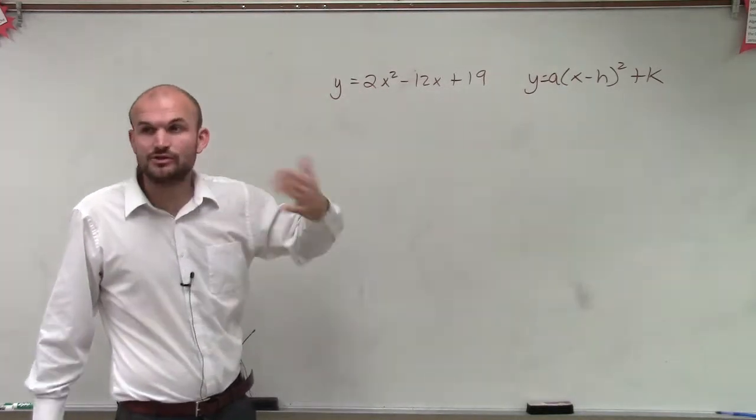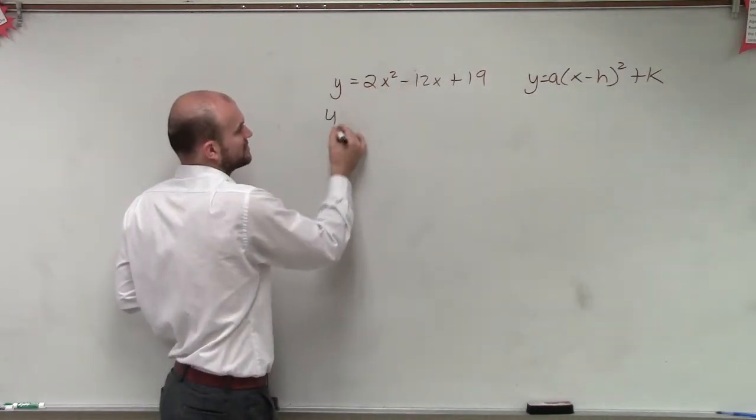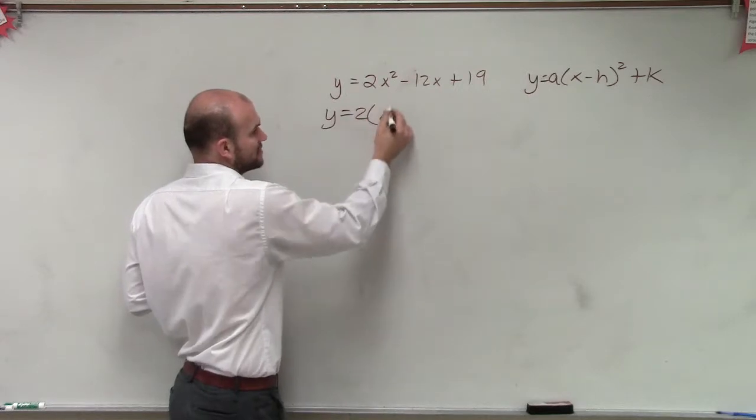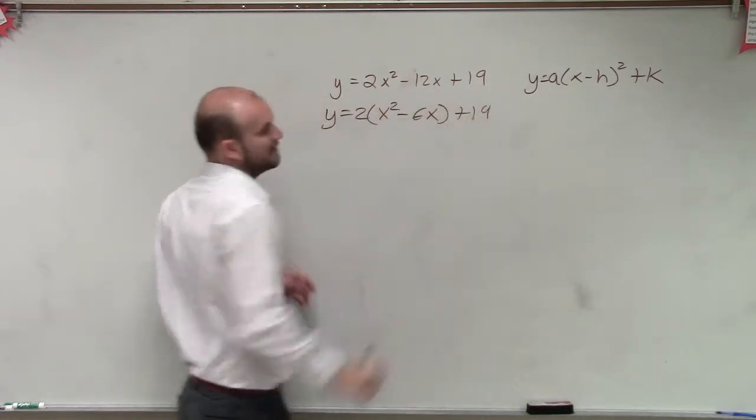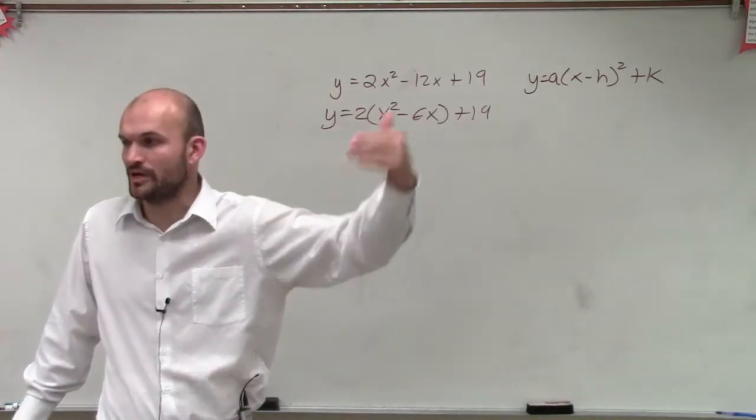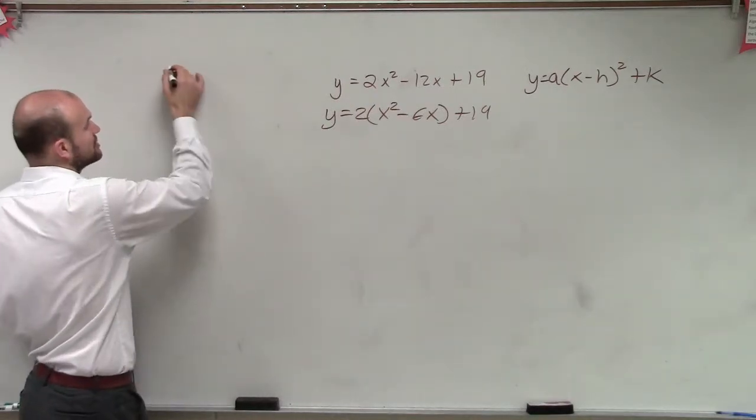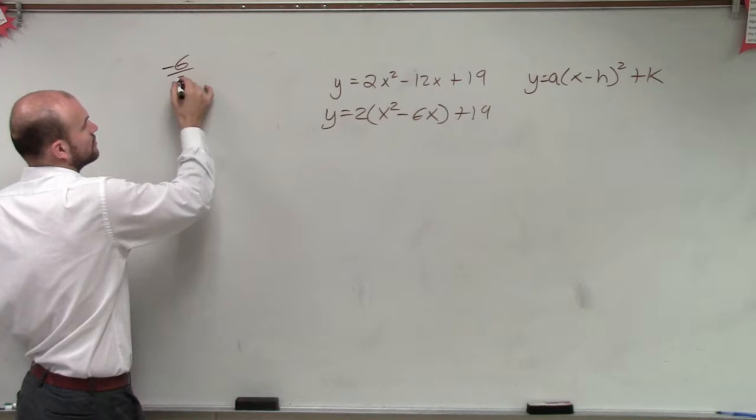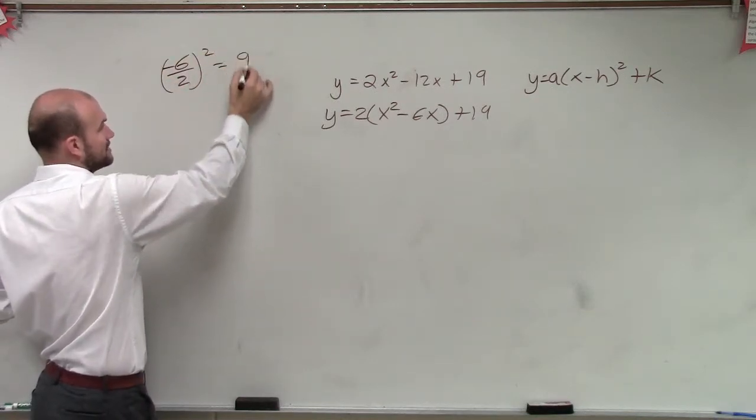So the first thing I have to do to complete the square, remember you can't have the two there. So we have y equals, factor out the two, x squared minus 6x plus 19. Now, I use my binomial to create a perfect square trinomial. To create a perfect square trinomial, I need to take my middle term, which is b, divide it by 2, and then square it, which gives me a positive 9.